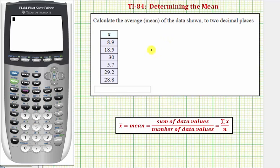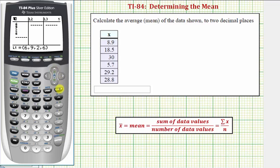So we first want to enter the data. We press the STAT key and then ENTER. We want to enter the data in L1. Let's first clear L1 by going to the top of the column, press CLEAR, and then ENTER.